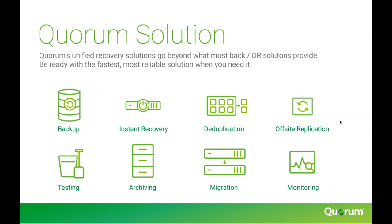We deduplicate data at the source and then across the appliance for two levels of deduplication, then create a recovered virtual server inside the appliance. If your server crashes, you can bring it up in the appliance and instantly get back to the production point from your last snapshot. With instant recovery servers for every snapshot saved, if you have ransomware that has infected your servers, you can work backwards in time to find which snapshot didn't have the ransomware.